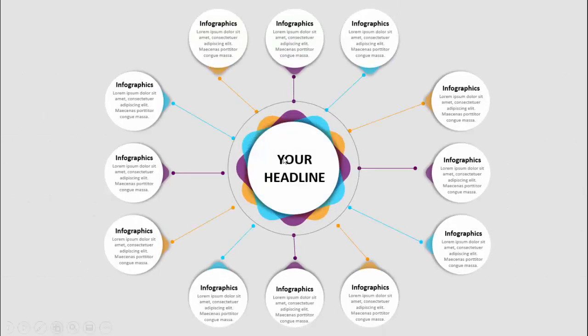In today's tutorial I'm going to show you how to create a 12-options infographic slide in PowerPoint. When I click you can see one design has come where I've given some different color combinations. You can add the title and 12 options connected with lines using the same color combination as the center. I've created two slides - one with animation and another without animation, so depending on your requirement you can choose.